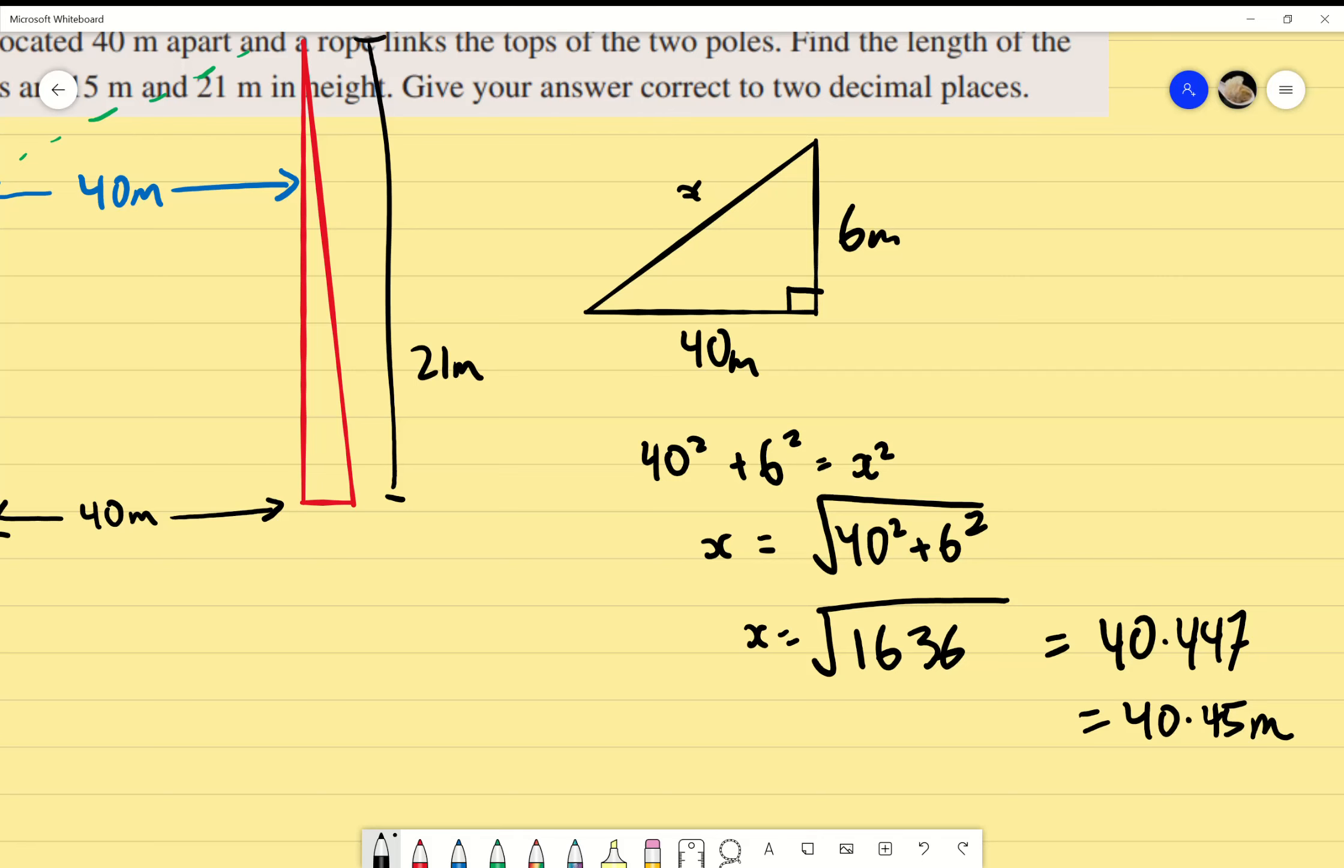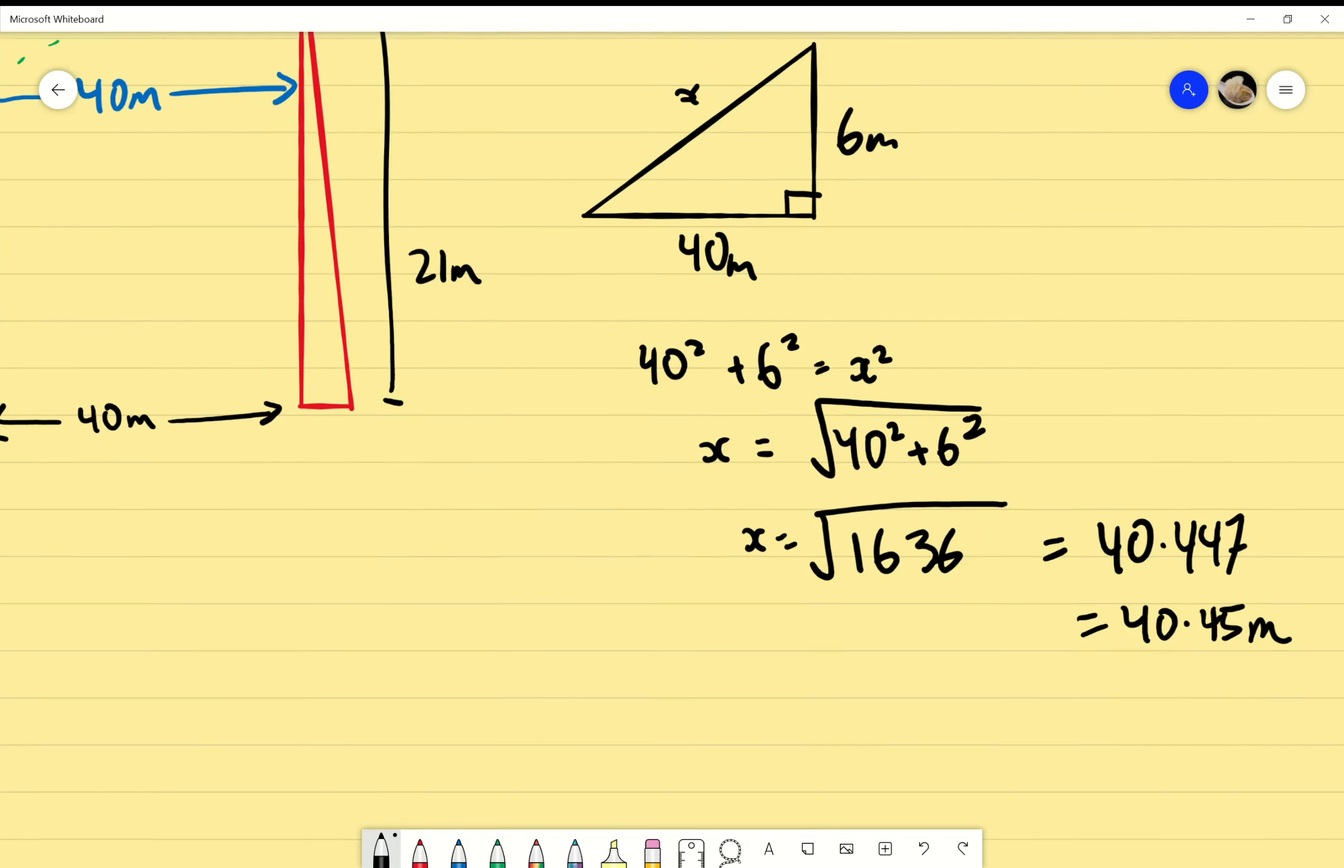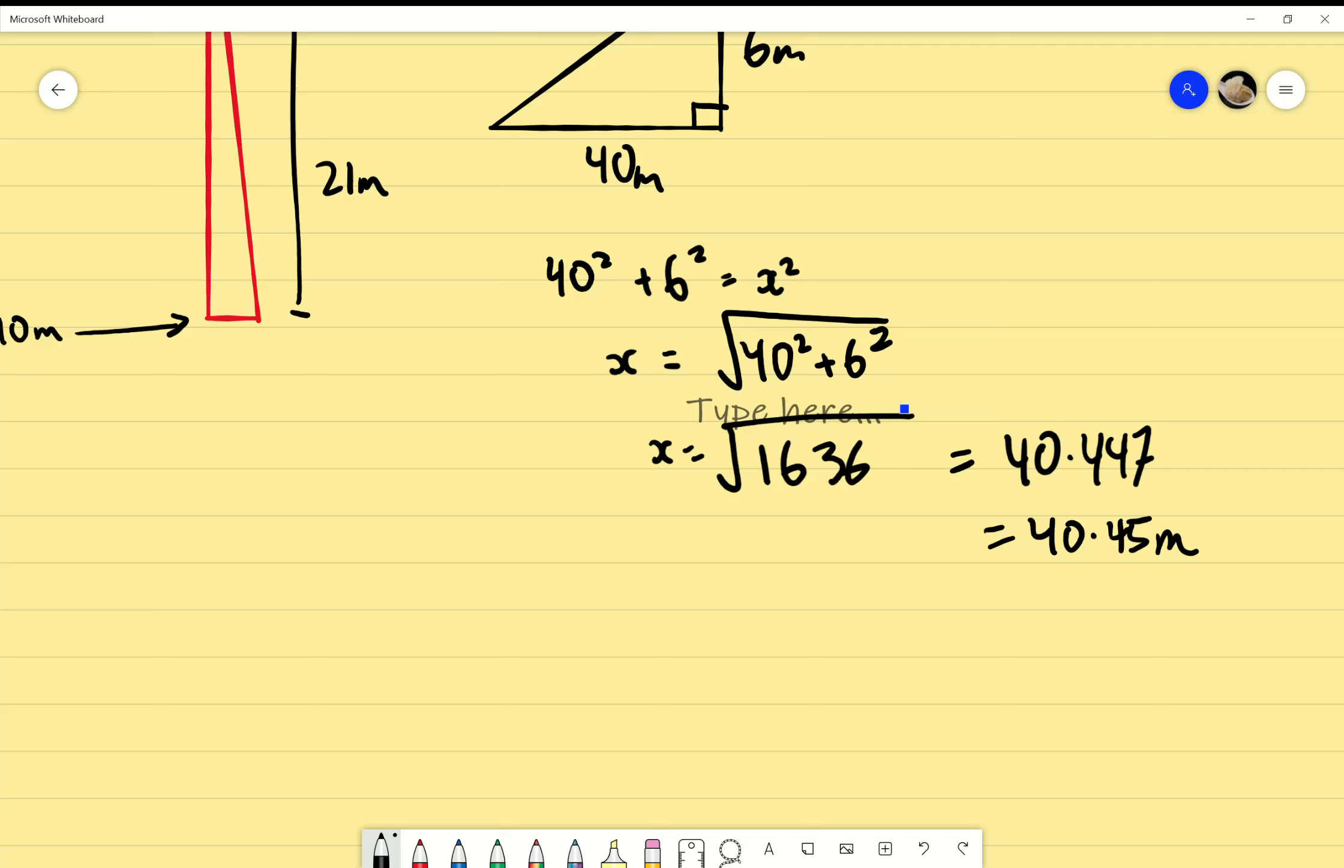Am I done? Answer in words. Thank you very much. I need to answer in words. So watch how quickly I write the words. Now, I'm going to write the words over here. So the rope, the length of the rope. Look how fast I write. The length of the rope is 40.45 meters. Done. That's it. Any questions? Full stop.